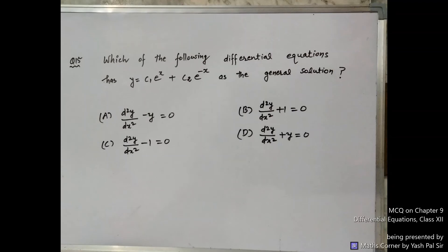Last question, question number 15: Which of the following differential equations has y = c₁·e^x + c₂·e^(−x) as the general solution? Option A: d²y/dx² − y = 0. Option B: d²y/dx² + 1 = 0. Option C: d²y/dx² − 1 = 0. Option D: d²y/dx² + y = 0. This is the last question.